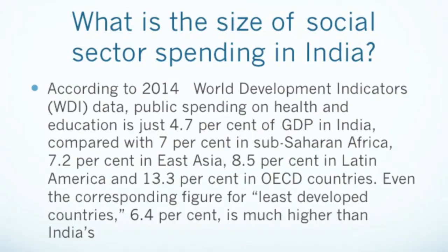Because of now-compulsory corporate social responsibility, most public and private sector organizations have come under the net of contributing to the social sector. According to 2014 World Development Indicators, public spending on health and education is just 4.7% of GDP in India, compared to 7% in sub-Saharan Africa, 7.2% in East Asia, 8.5% in Latin America, and 13.3% in OECD countries. Even the figure for the least developed countries — 6.4% — is much higher than India's 4.7%. This is something one has to address.